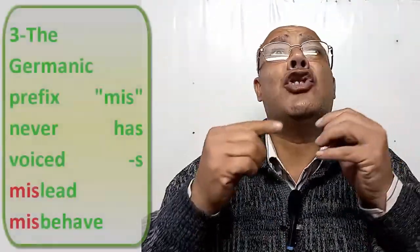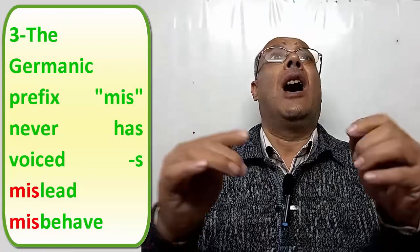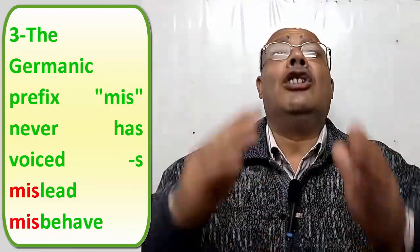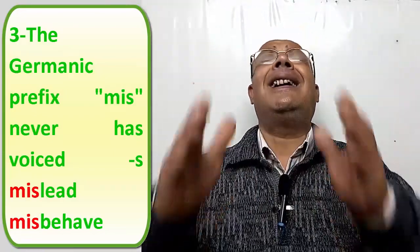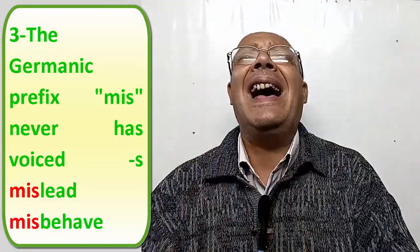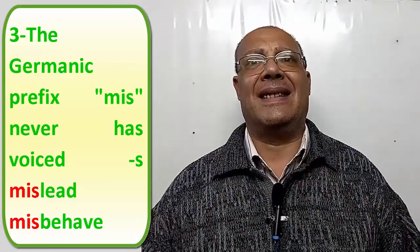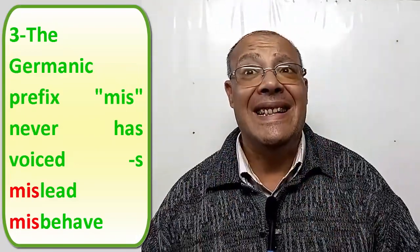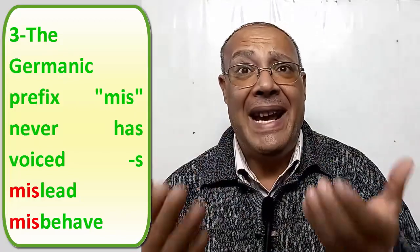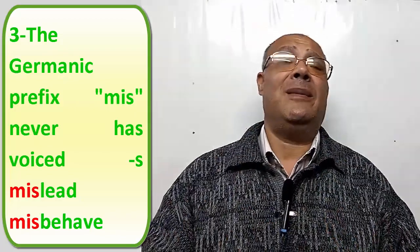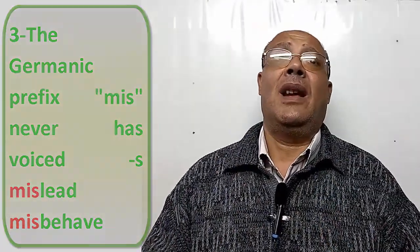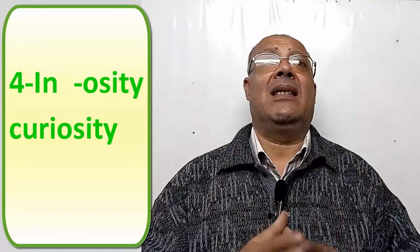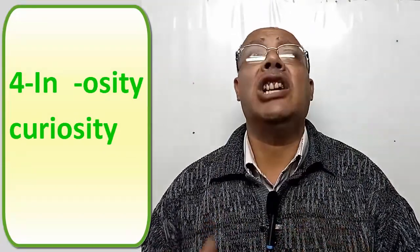The Germanic prefix MIS- never has a voiced S: mislead, misbehave. In -osity words, for example: curiosity.